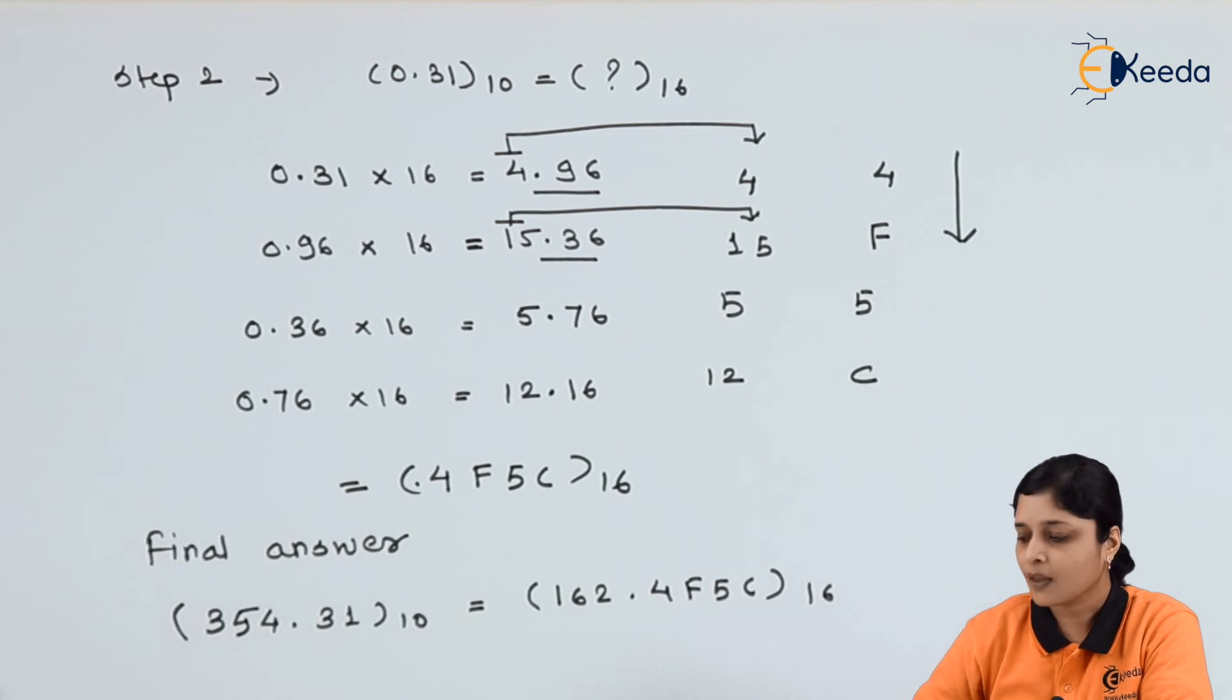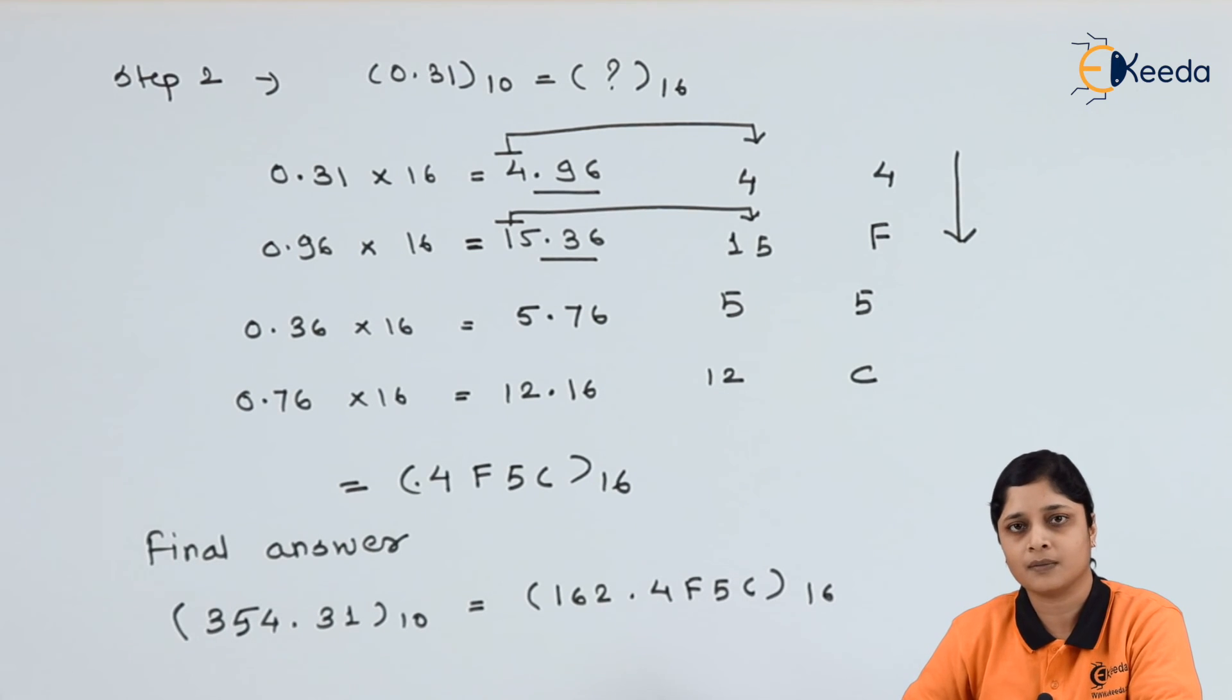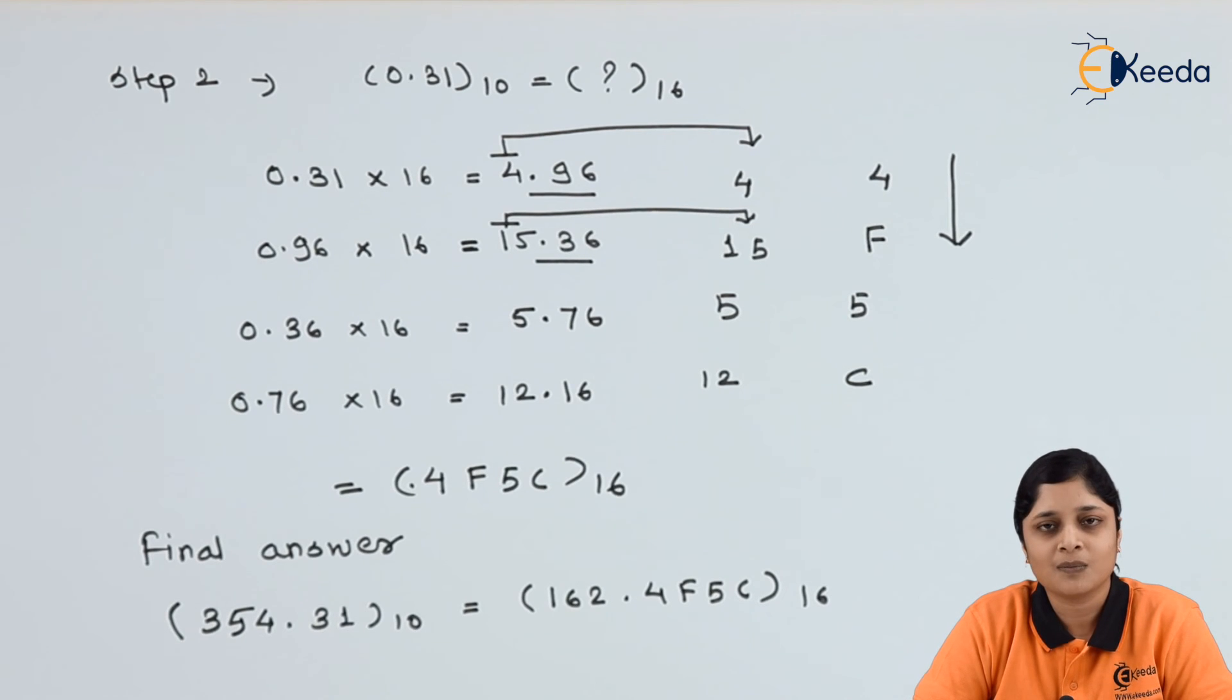So you will write 162.4F5C to the base 16. Combining the answers from step 1 and step 2, you will get your final answer by successive division method and later by successive multiplication method. Thank you for watching this video. Stay tuned with Meeda and subscribe to Meeda.